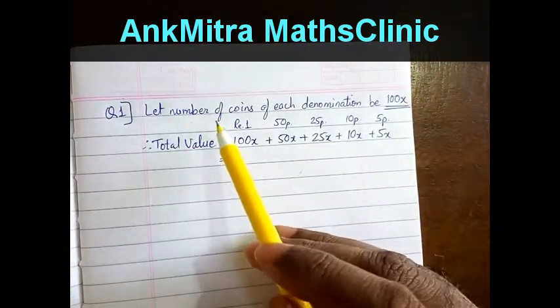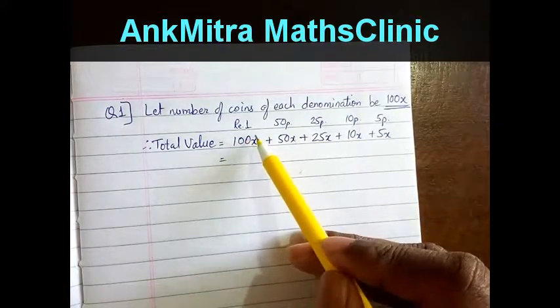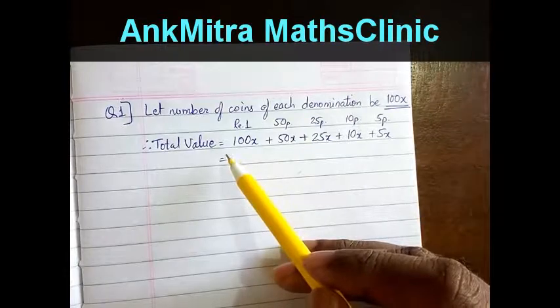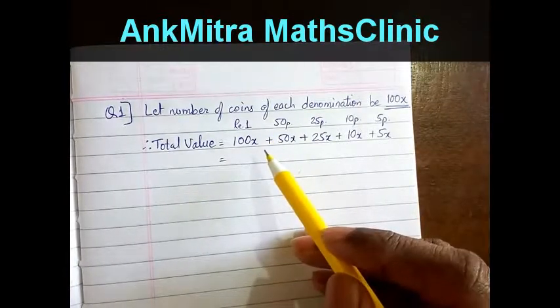The main point is the number of coins of each denomination is equal and the total value of all the coins is rupees 380.